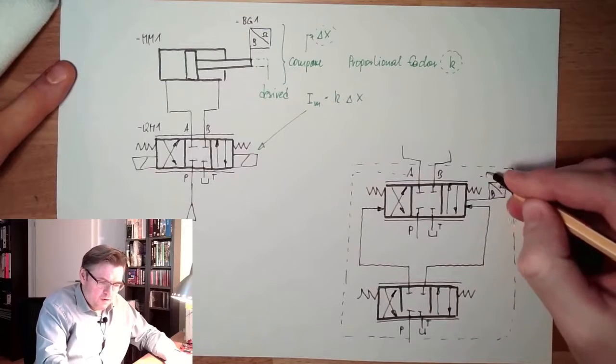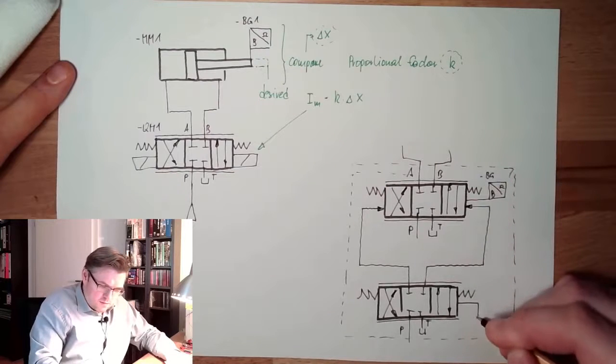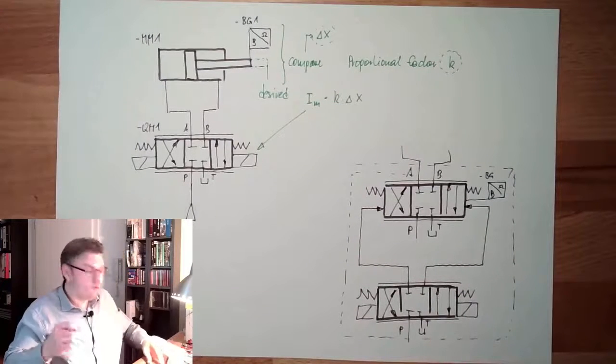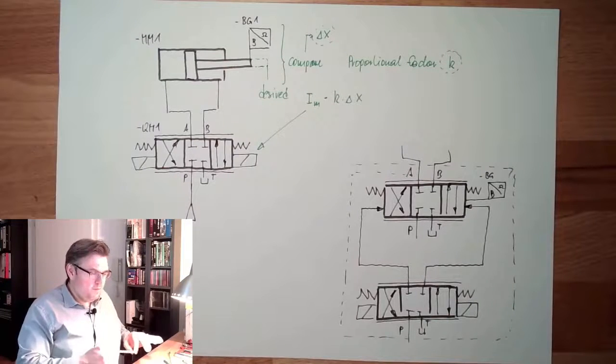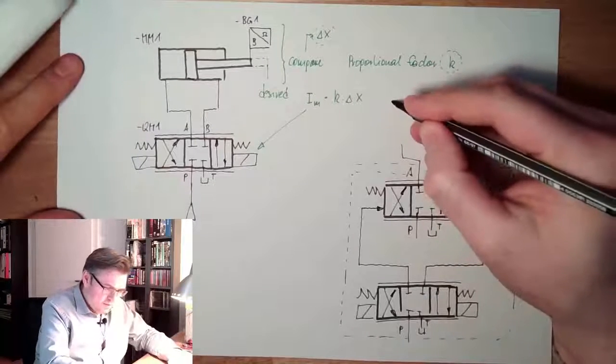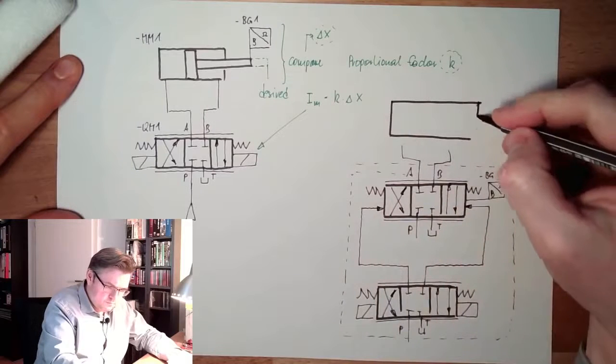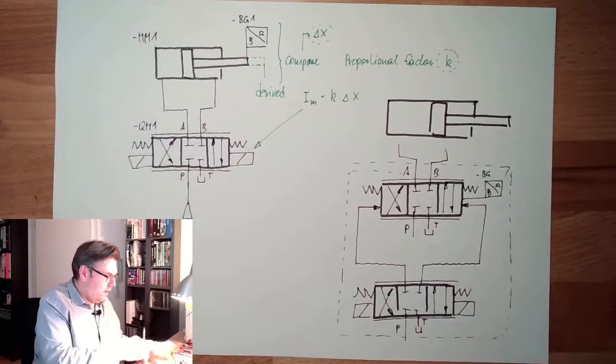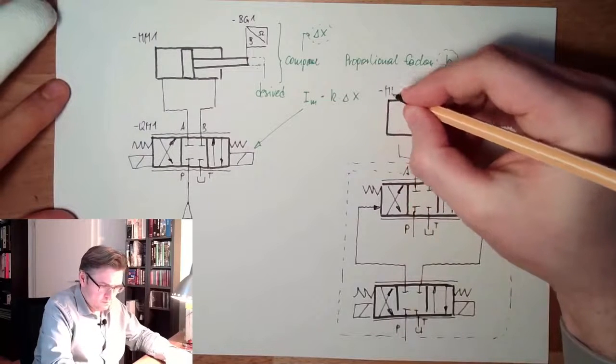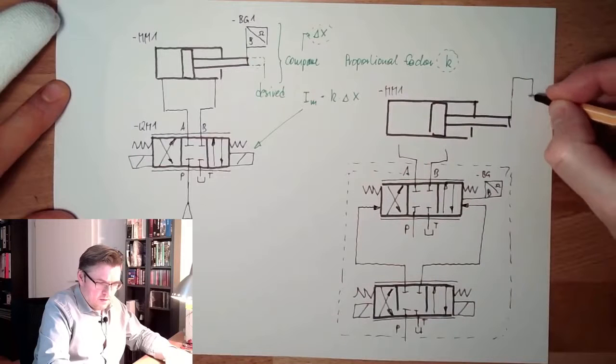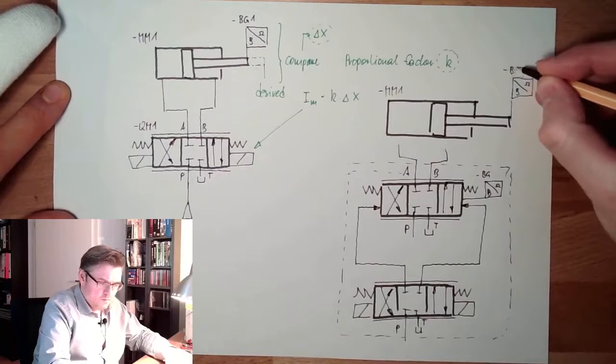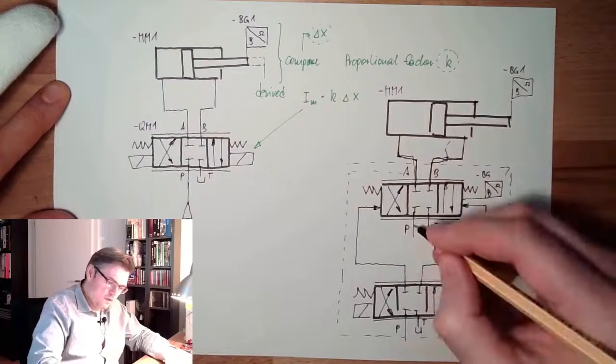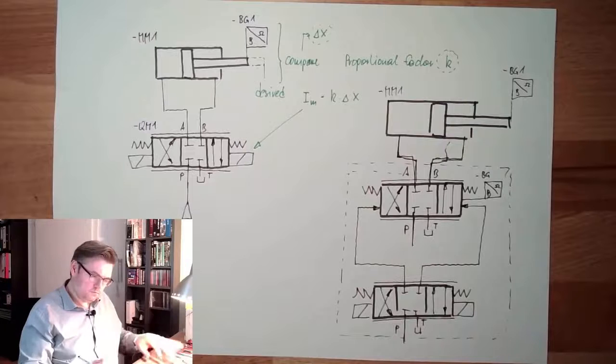And, depending on this position measurement, the current of the pre-control valve is selected. And now I draw the cylinder because I have the space. Let's call it again MM1. There is again the position measurement. And there are the lines which go to the two chambers.